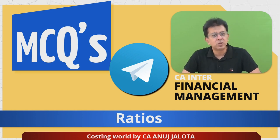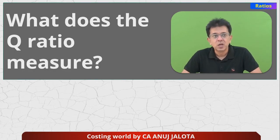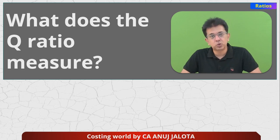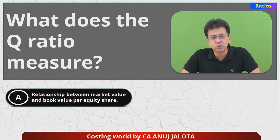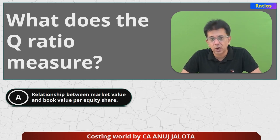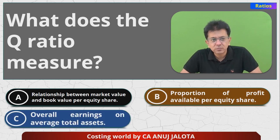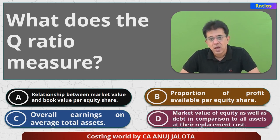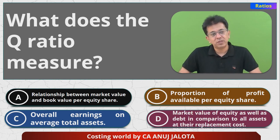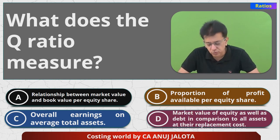So, what does the Q ratio measure? Four options: Option A — relationship between market value and book value per equity share. Option B — proportion of profit available per equity share. Option C — overall earnings on total assets. Option D — market value of equity as well as debt in comparison to assets at the replacement cost.